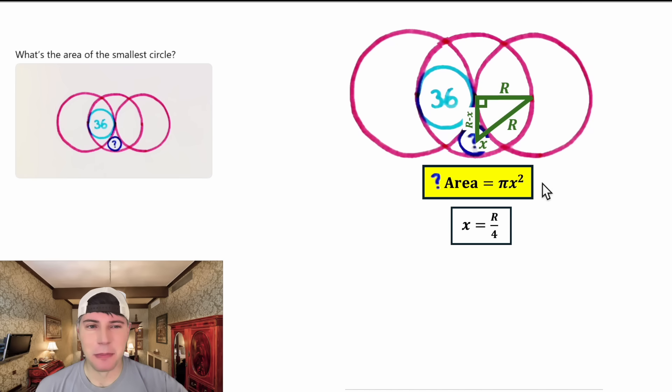We know the area is equal to pi x squared, and we know x is equal to big R over 4. Now we've got to figure out what is big R. Well, we still haven't used this circle with area 36. The diameter of this circle is equal to the radius of the pink circles. That means it's equal to big R. So the radius of this circle would be half of that, or big R over 2.